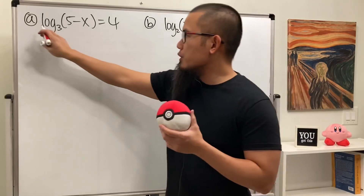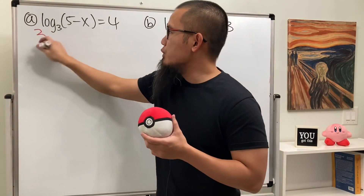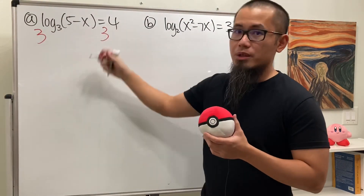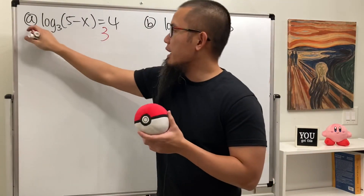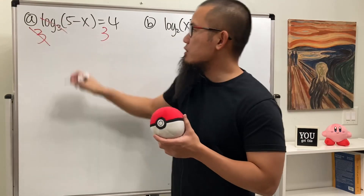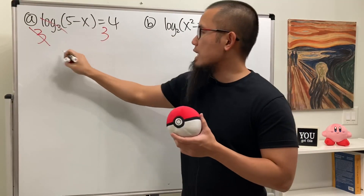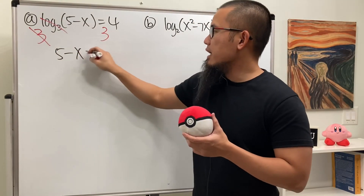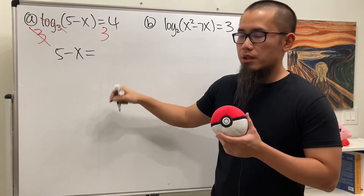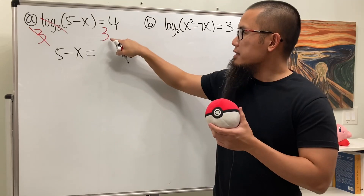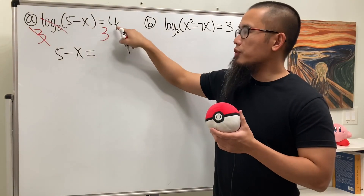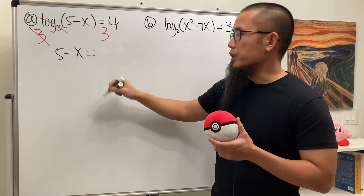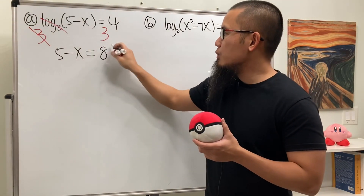To do this, we're just going to do 3 to that power on both sides, because this way these can cancel, and we will just have 5 minus x equal to 3 to the fourth power. Work that out — we get 81.